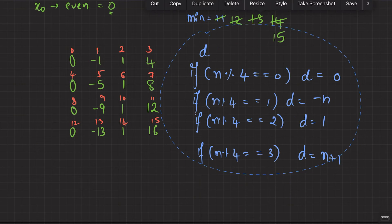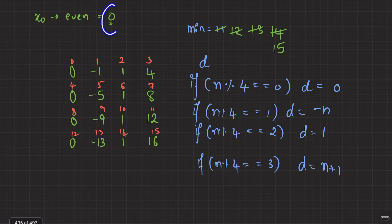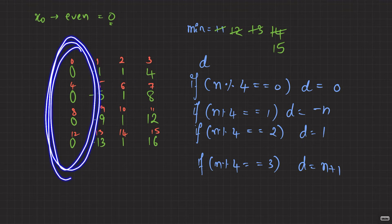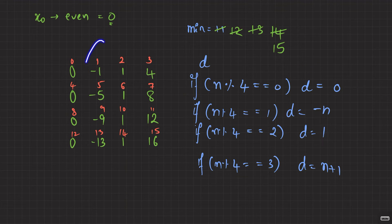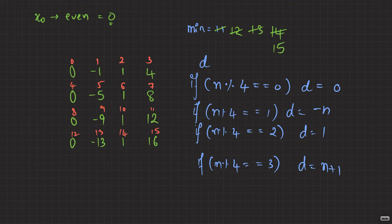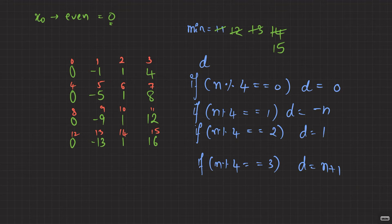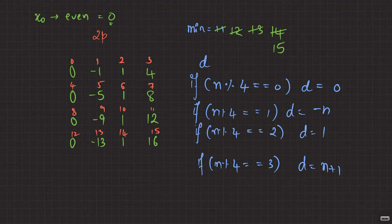So you just did a simple dry run starting from x₀ = 0. You found that when the number of minutes is a multiple of 4, the final destination is 0; when it leaves remainder 1, it's −n; when remainder 2, it's 1; when remainder 3, it's n + 1. You got the answer for x₀ = 0. Now can we generalize it for any even number?